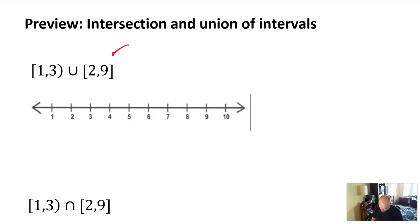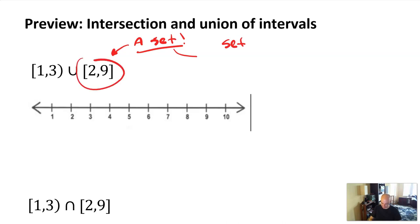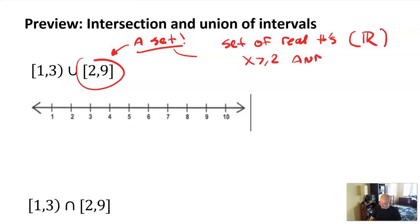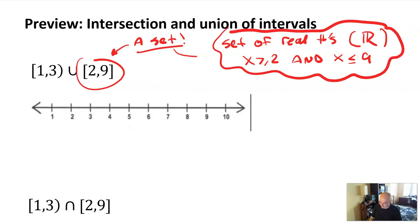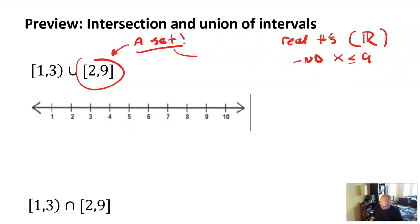Here's another thing that sometimes comes up: unions and intersections of intervals. Technically, an interval is another type of set — it's a set of real numbers. The interval [2, 9] is the set of all real numbers x where x is greater than or equal to 2 and x is less than or equal to 9. So it's just a set with some conditions — that's still a set. We'll talk about how to write this in set builder notation later. But now I want to talk about how to compute unions and intersections of these interval sets.